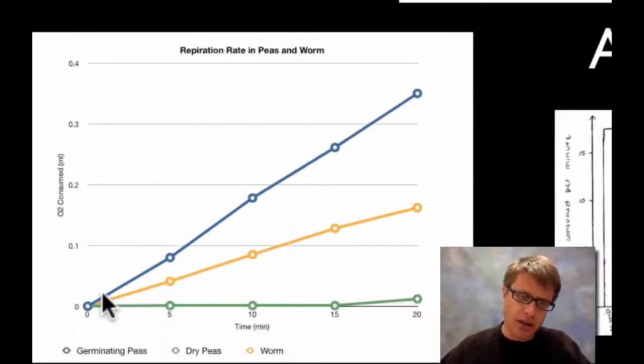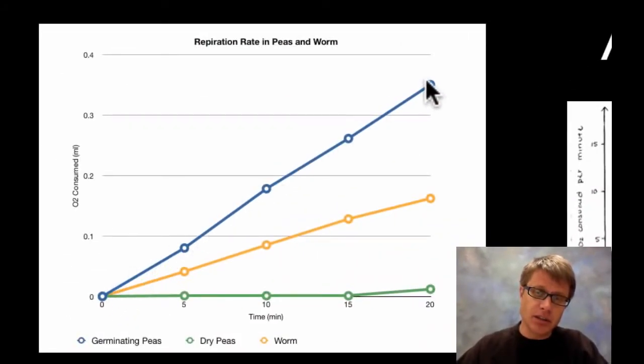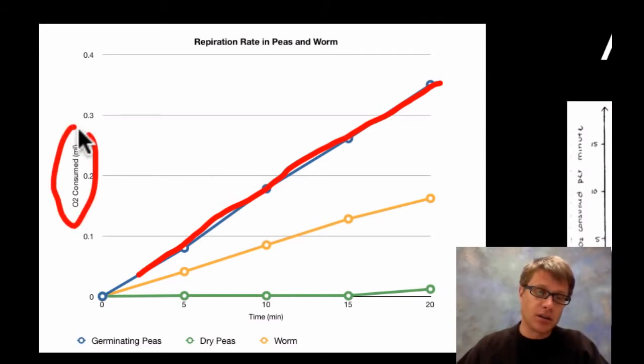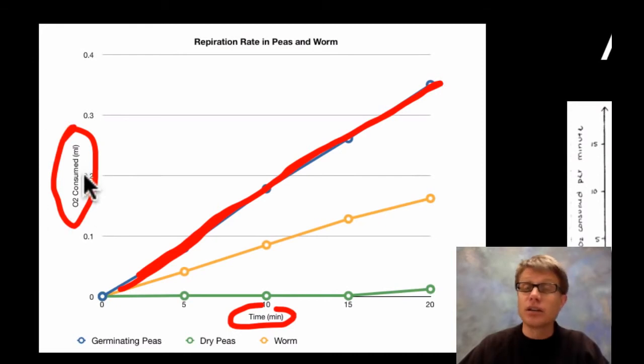But if you look at this person's data what they got is the steepest line, and they should all be linear, is going to be the germinating peas. So the germinating peas are going to have a line like that. This is the milliliters of oxygen consumed, then it's going to be time on the bottom, time in minutes. And so the slope of this line, if I were to figure out the slope of this line in milliliters of oxygen consumed over minutes, that's going to be the rate of respiration.